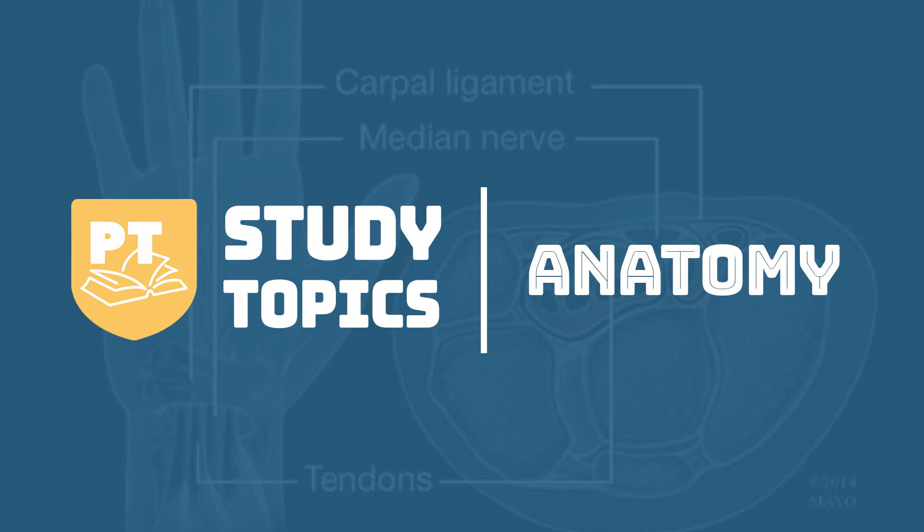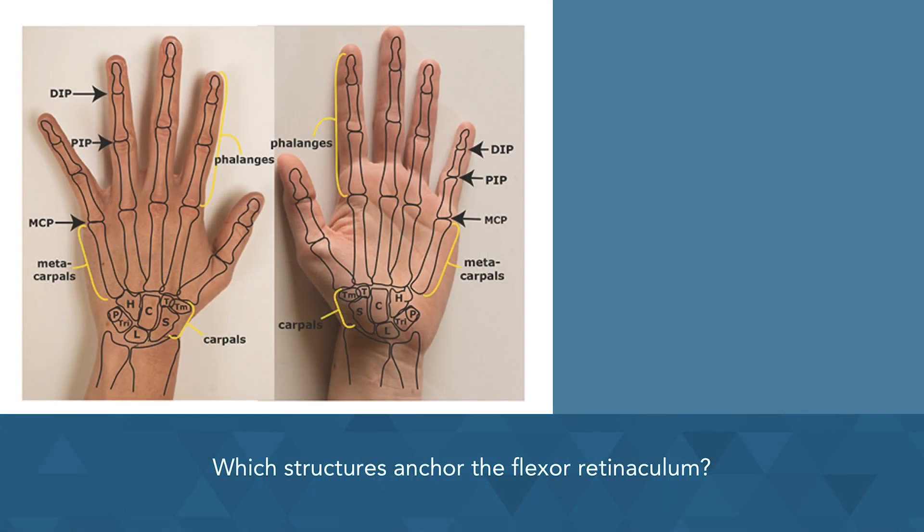Let's talk about the important features of the flexor retinaculum. The flexor retinaculum is also known as the transverse carpal ligament or the anterior annular ligament. Be familiar with all three terms, as you're not sure which one may show up on the exam.